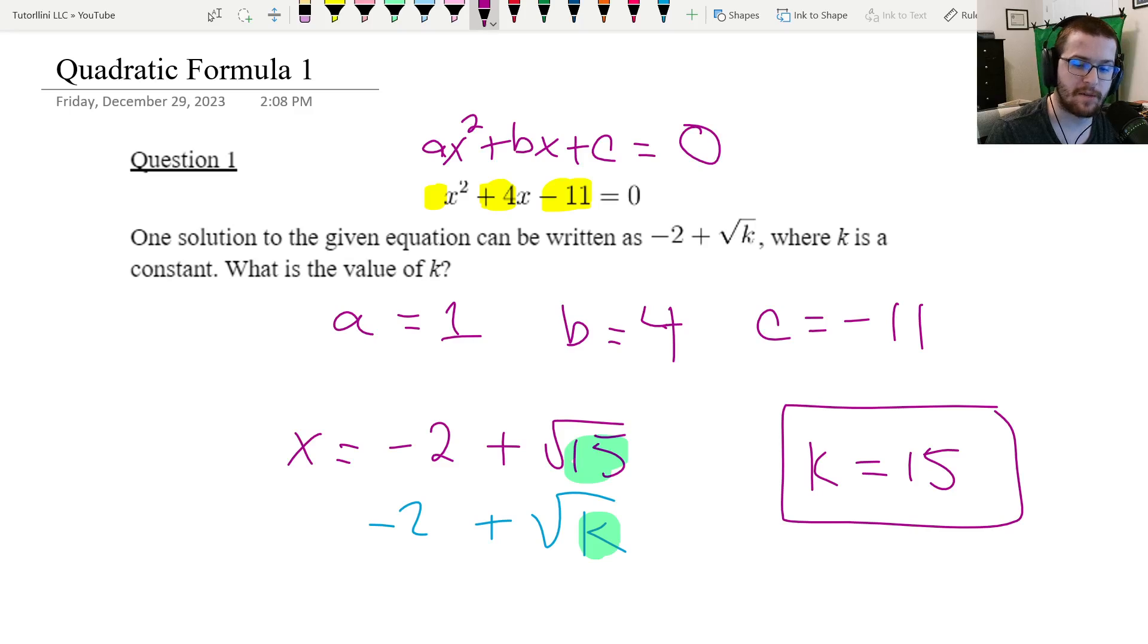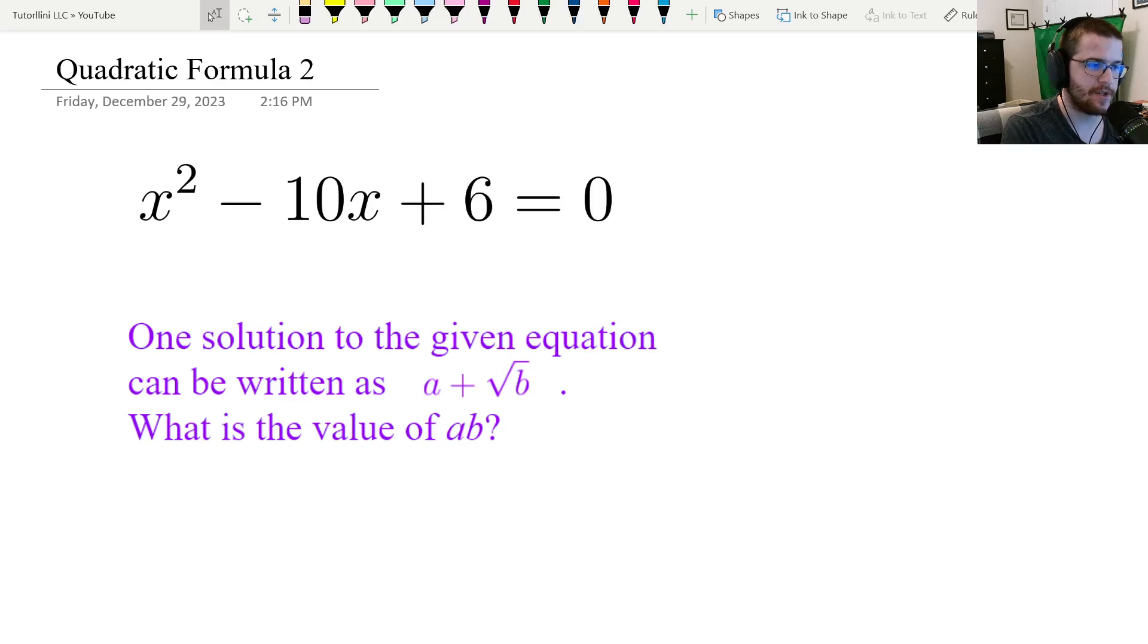Awesome, let's do one more example. Okay, same deal for this question. We're just going to hold up ax squared plus bx plus c equals zero. A is one, b is negative ten, and c is positive six. So, a is one, b is negative ten, c is positive six. And just before we jump to the calculator, I'll point out that, again, we want the solution with a plus in front of it. It doesn't matter too much. All right, let's jump to the calculator.